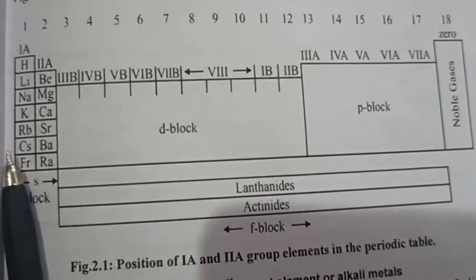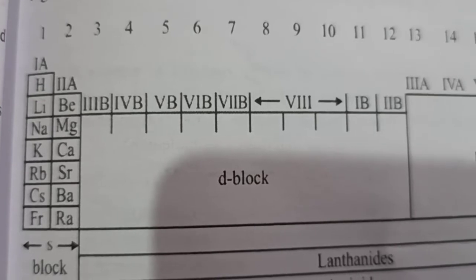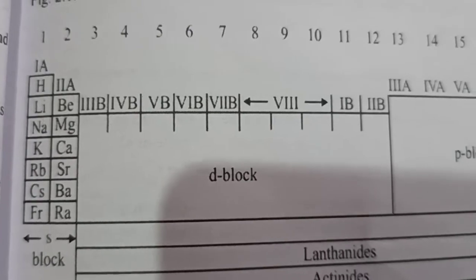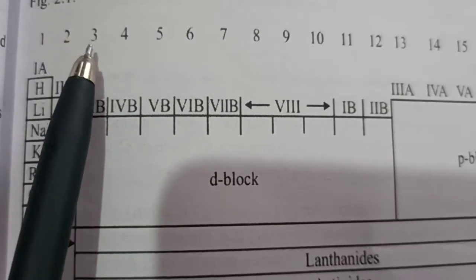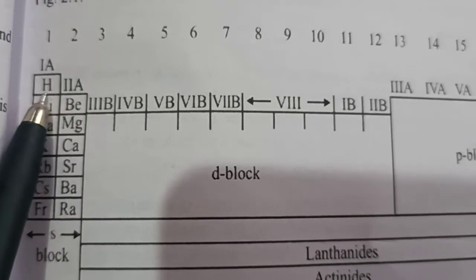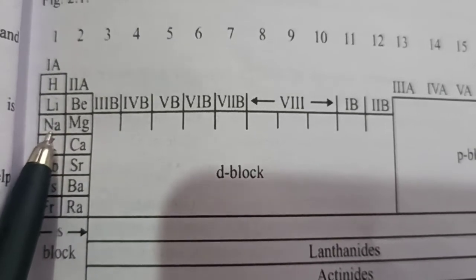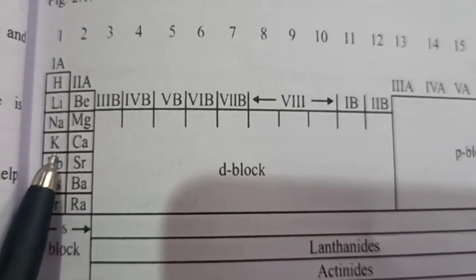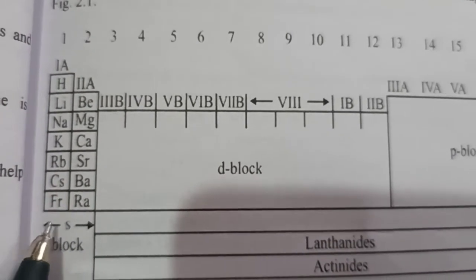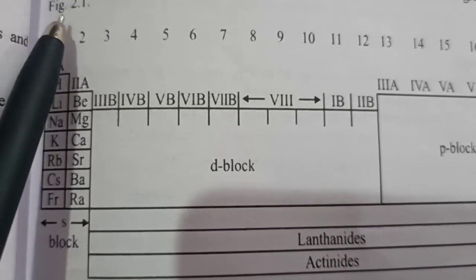So there are two groups which are present in S-block, that is group number 1A and group number 2A. These are also denoted by group number 1 and group number 2. In group 1, the elements are H (hydrogen), Li (lithium), Na (sodium), K (potassium), Rb, Cs, and Fr (francium). These are the elements which are in group number 1.